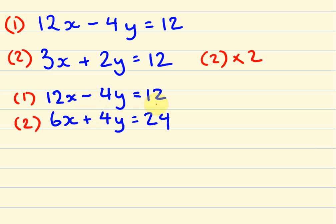So if we add these two equations together, what we get is 12x + 6x is 18x. These guys cancel each other out, 12 + 24 is 36, so 18x = 36, therefore x = 2.